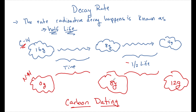They're going to give you the half-life for each element and ask something like: how many half-lives would it take carbon-14 to get to 4 grams if it starts at 16 grams? You would say it would take two half-lives for carbon to get from 16 down to 4.